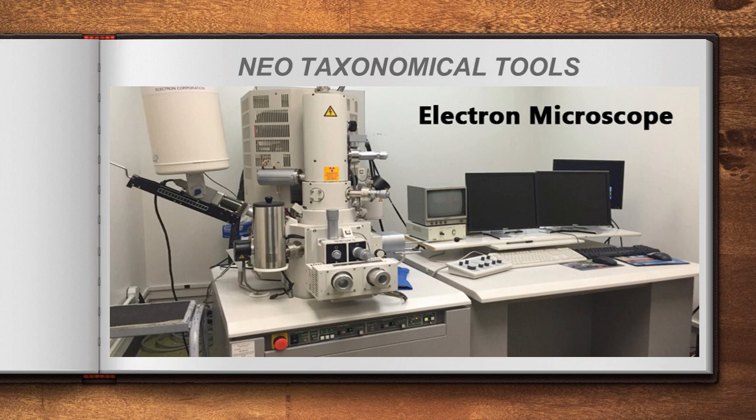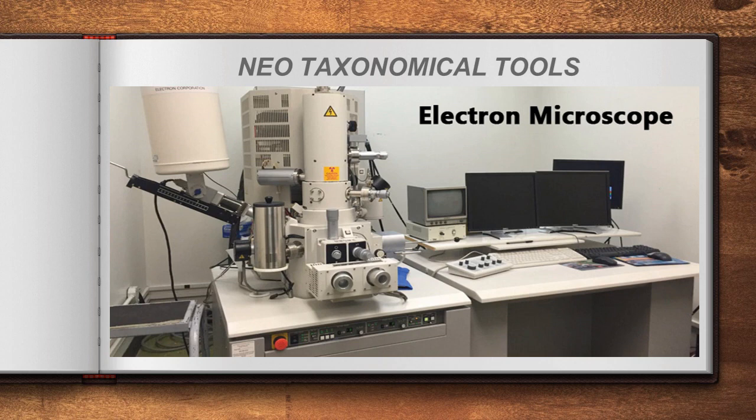Neo-taxonomical tools include various microscopes such as the dissection microscope, compound microscope, scanning electron microscope, and electron microscope. Using an electron microscope, even a single cell can be sliced into various pieces and minute details of each component can be studied, helping to understand each organism in great detail.